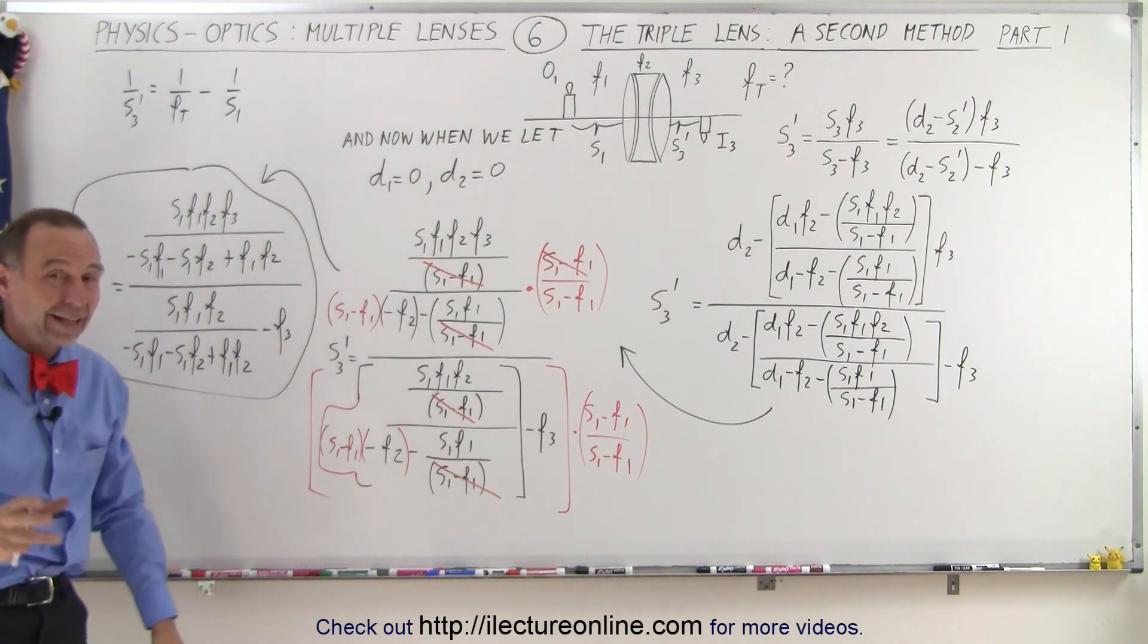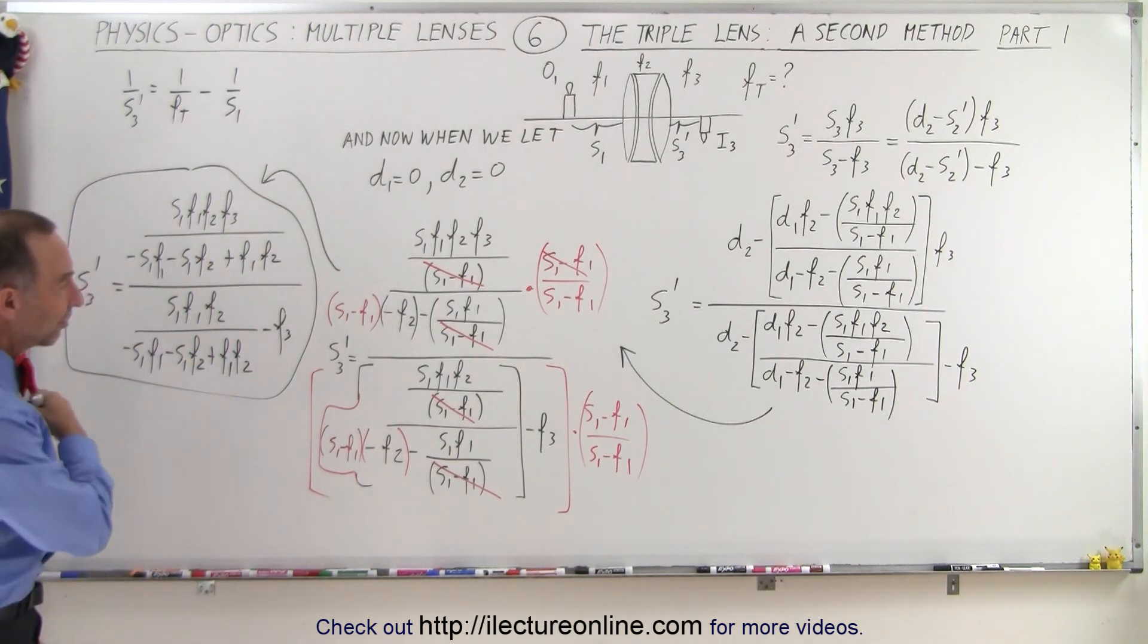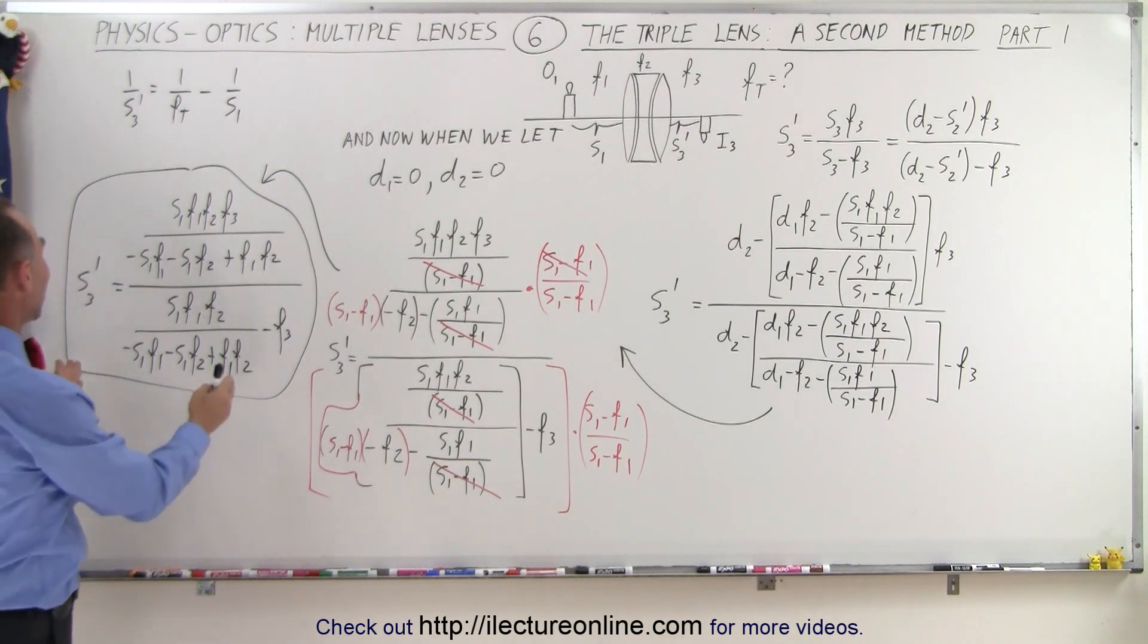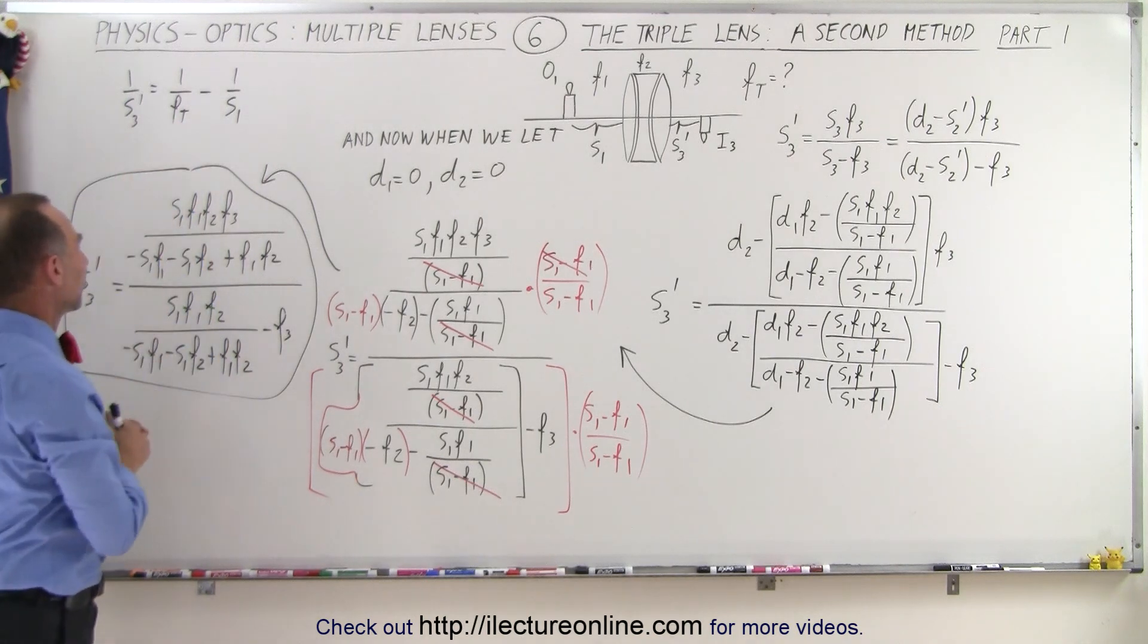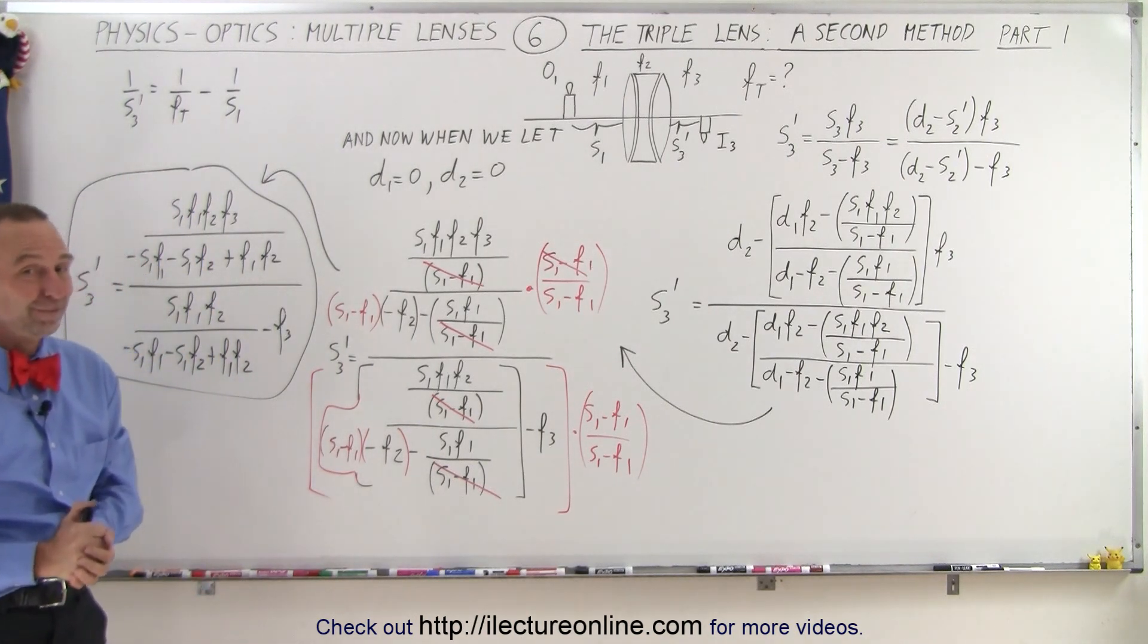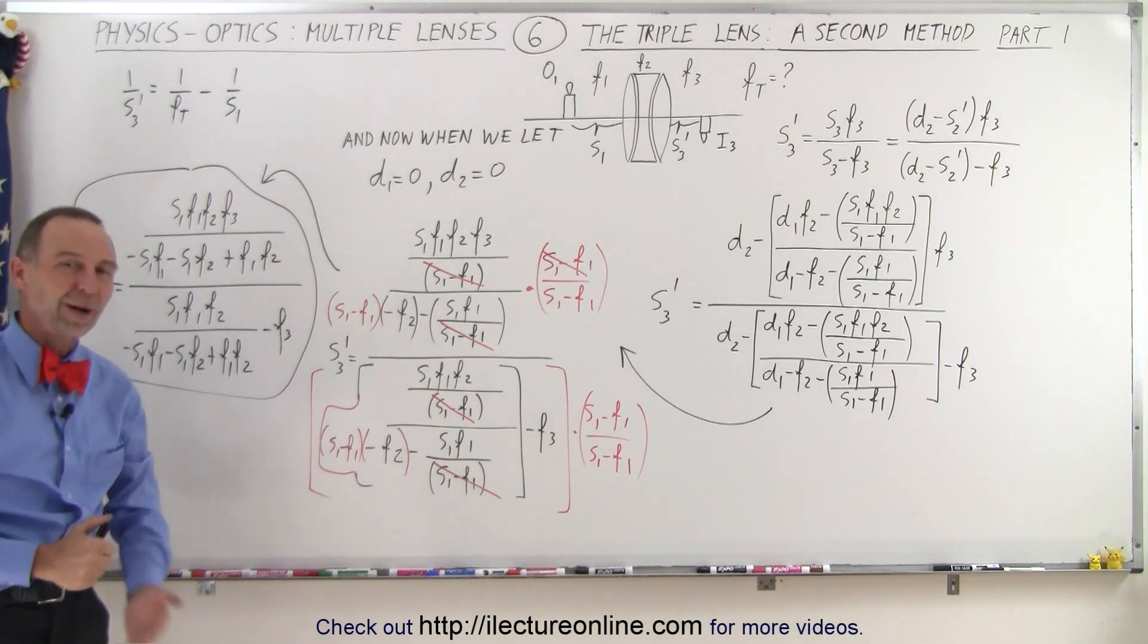We want to solve for F total. That is the equivalent focal length of the three lenses combined. And somehow, we're supposed to get it out of this equation. Obviously, with the lack of board space, we'll do another video to complete this one. And hopefully, we'll find the equivalent focal length for the three lenses using this approach as well. That's how it's done. Stay tuned. We've got the next video to finish off the problem.